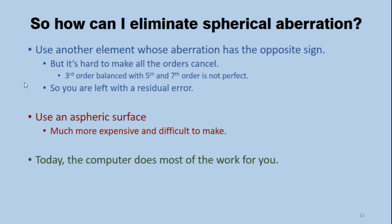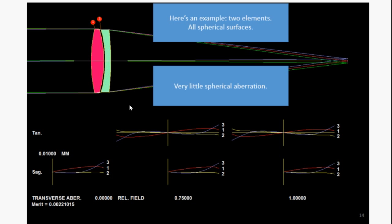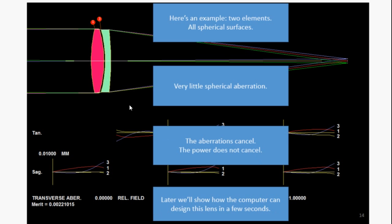So how can you eliminate spherical aberration? Well, one way is to use another element whose aberration has the opposite sign. It's hard to make all the orders cancel. Because there's a third order, there's also a fifth and seventh and so on. And if the third orders cancel, well probably the fifth will not cancel. So you're left with a residual error. You can also use an aspheric surface, which is much more expensive. Today the computer does most of that work for you. For example, two elements, all spherical surfaces, and this very little spherical aberration, as you can see, because the aberration of the negative power lens almost exactly cancels out that of the other lens. And I will show later how the computer can design this in just a few seconds.